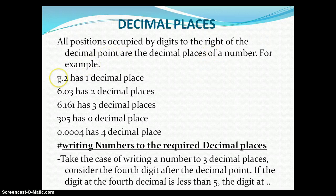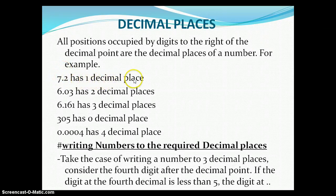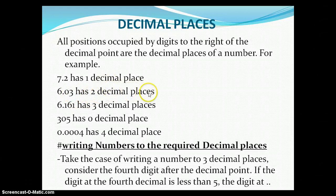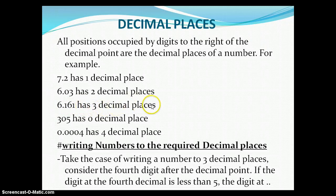Take a simple example: we have 7.2. After the decimal point there is only the digit two, so we say this has one decimal place. We have 1.003 — after the decimal point we have zero and three, so we say this has two decimal places. Then we have 1.161 — after the decimal point we have one, six, one, so we say that has three decimal places.